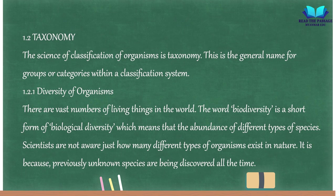1.2.1 Diversity of Organisms. There are vast numbers of living things in the world. The word biodiversity is a short form of biological diversity, which means the abundance of different types of species. Scientists are not aware just how many different types of organisms exist in nature, because previously unknown species are being discovered all the time.